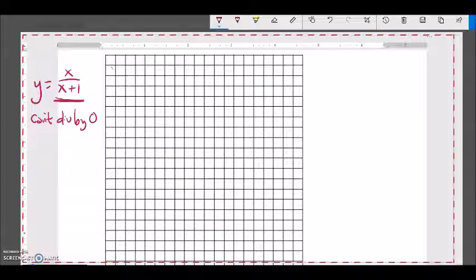So, that's my first thing to check. And so, if I look at just this denominator right here, x plus 1, that equals 0 when x is equal to negative 1. So, I know I have a vertical asymptote at x equals negative 1.